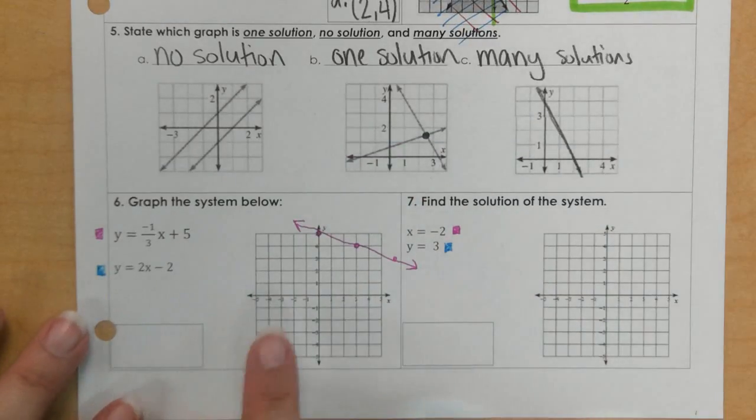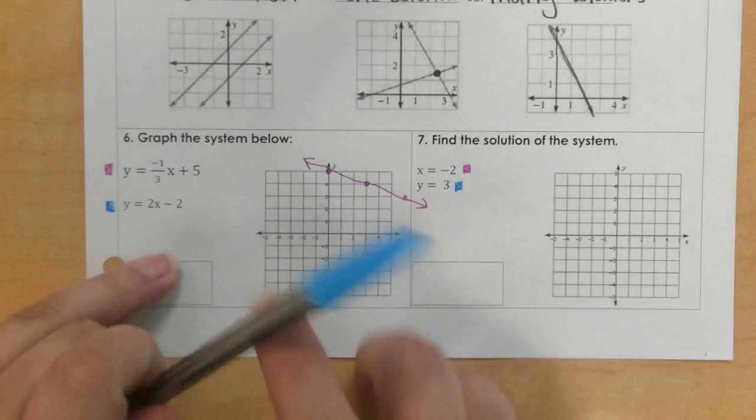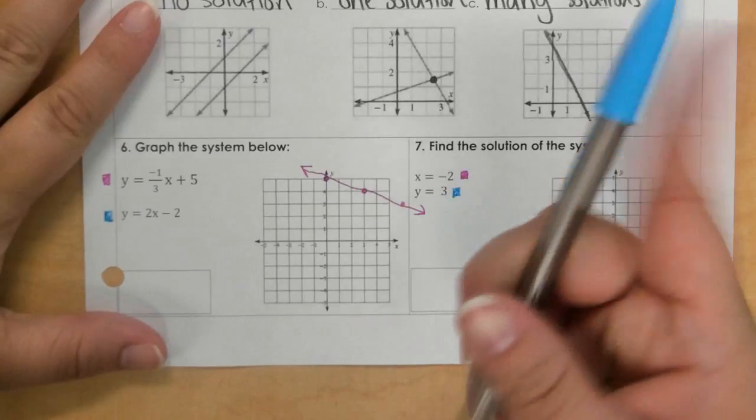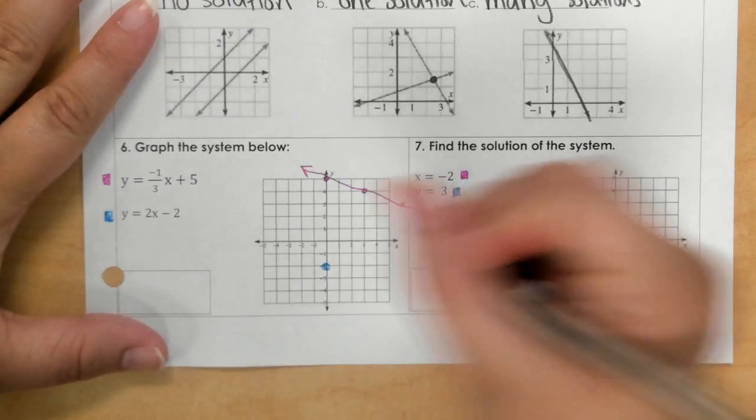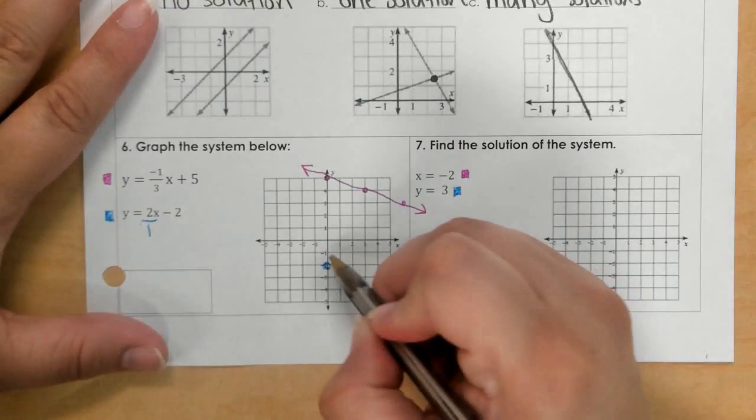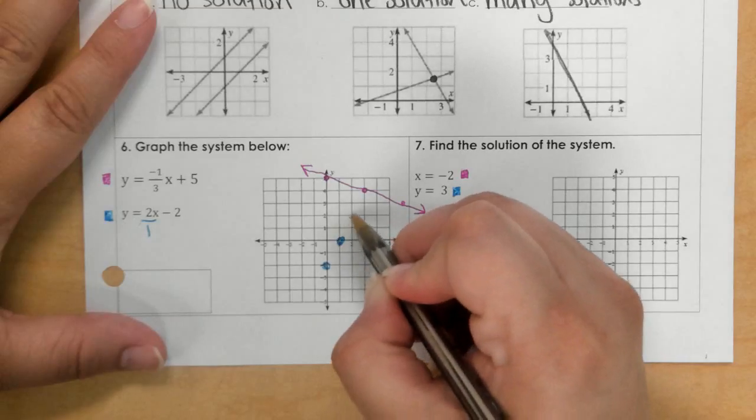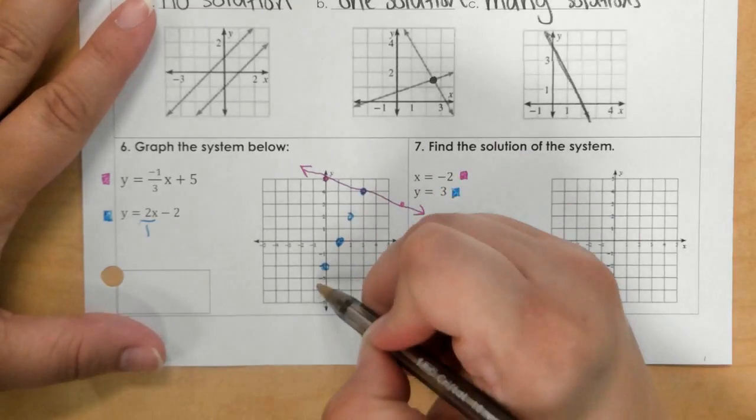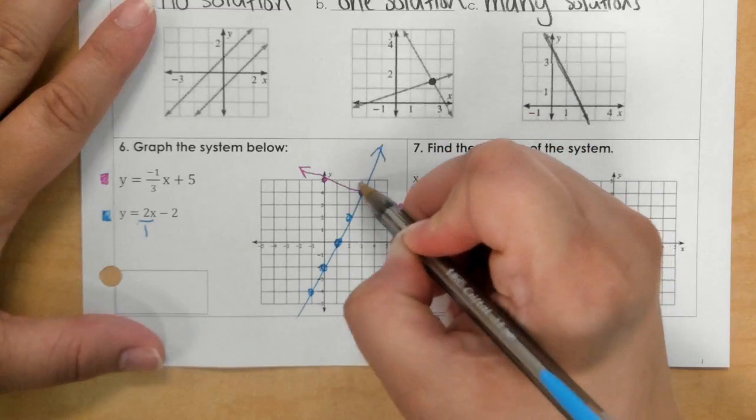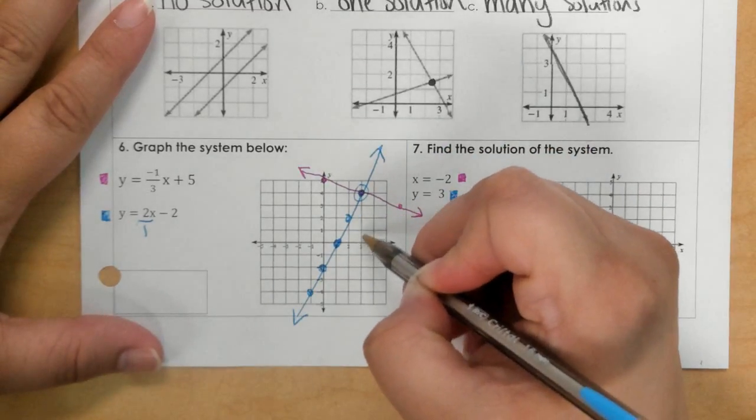For the second equation, we're going to start at negative 2, and we're going to rise 2, run to the right 1. You can see that we're going to intersect here at 3.